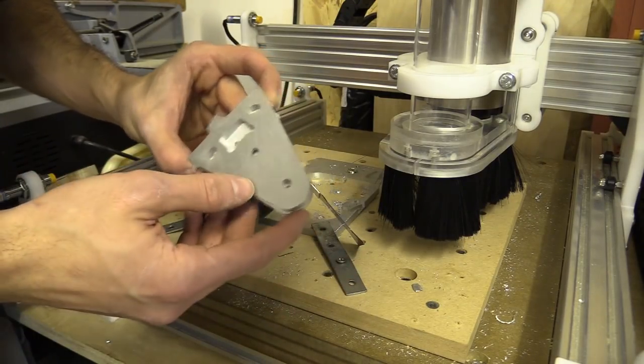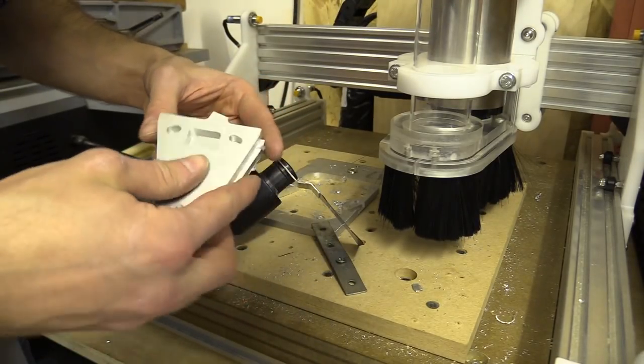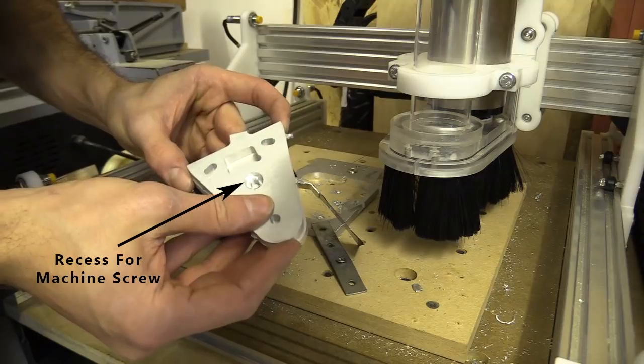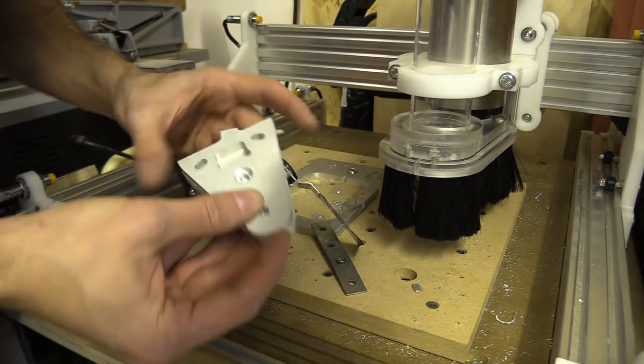It almost feels like my vectors for this plate are coming out backwards. I also made a recess for the machine screw, which would eventually hold the C beam for the Z axis, and now that's on the wrong side. So what I thought was the left section of the pivot plate is now going to be the right side.